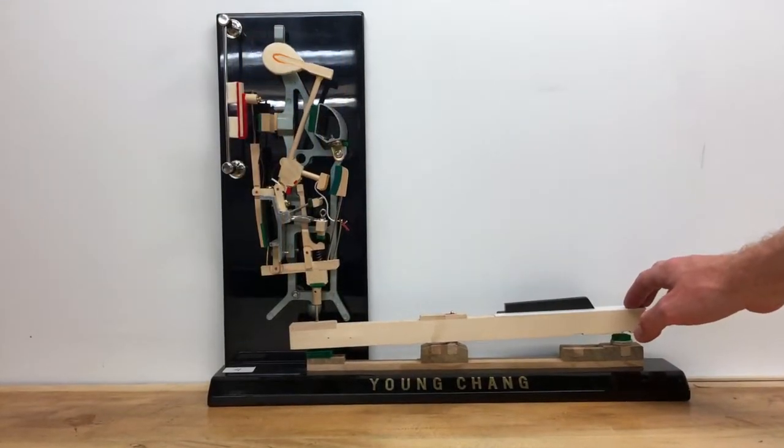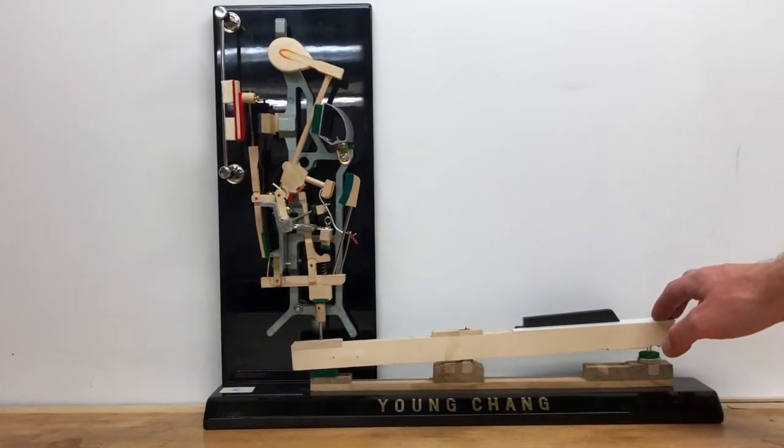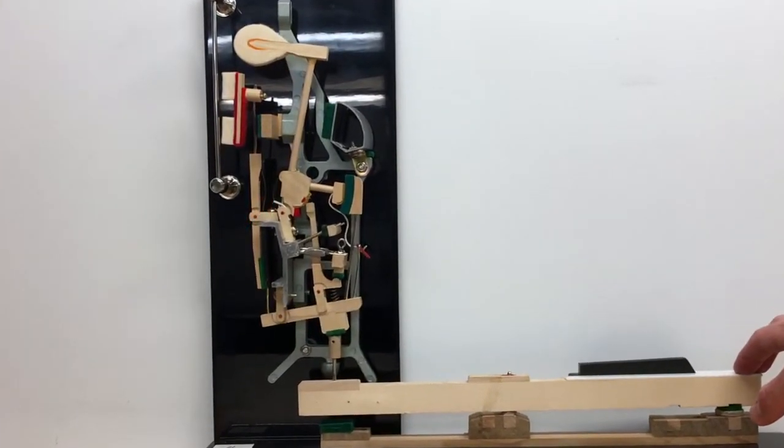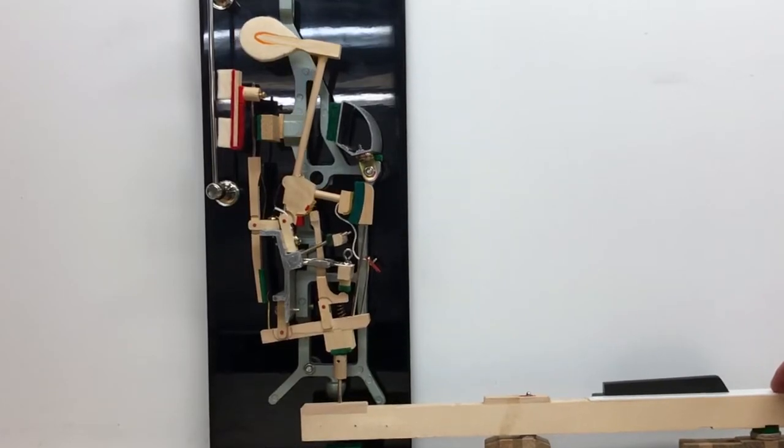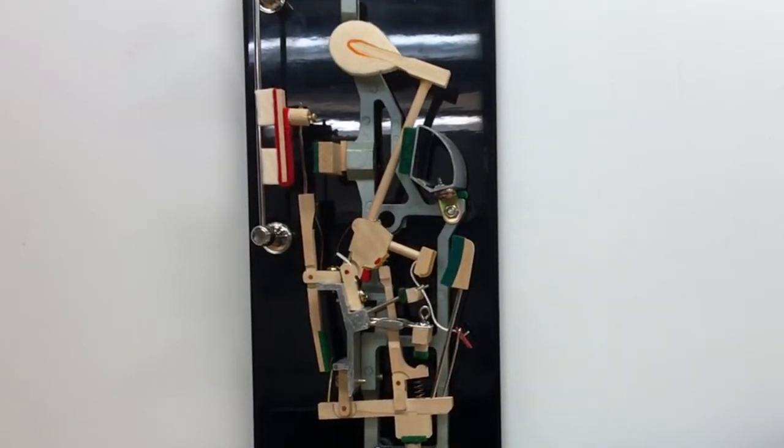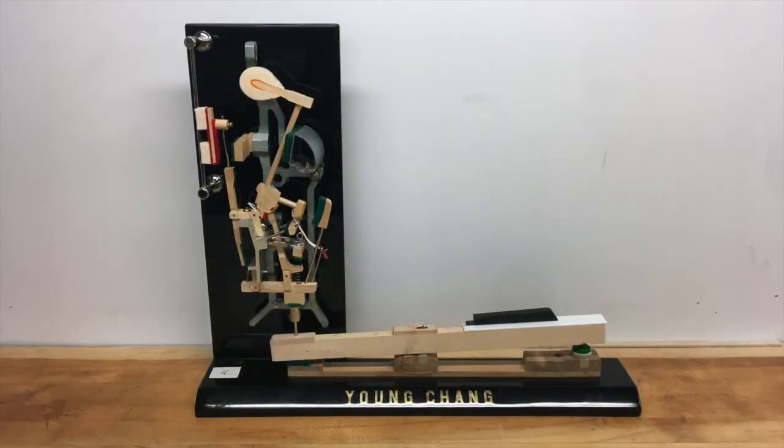When the key is released, the whippen drops down and the back check releases the hammer. The hammer return spring pushes the hammer away from the string, and in fast playing, the bridle tape gives a little tug. They help the hammer return to the hammer rest rail. The action parts are now back in their original locations, ready to be played again.